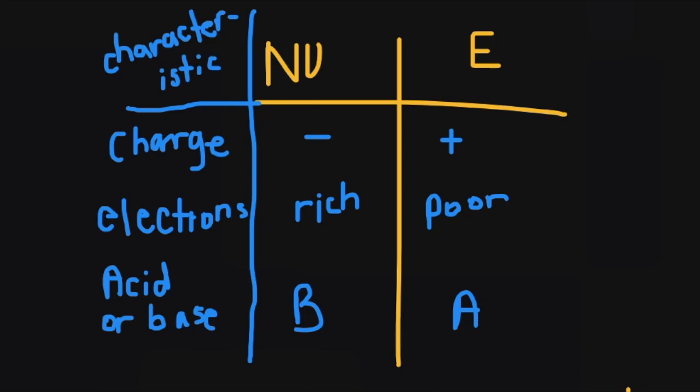Nucleophiles are electron-rich — they have more electrons around them than they usually need, causing their formal charge to become negative. On the other hand, electrophiles are electron-poor and usually have empty orbitals, causing them to have a positive formal charge. The last characteristic is that nucleophiles are usually considered bases, and electrophiles are usually considered acids. When you come across acid-base or nucleophile-electrophile reactions, you need to identify which shape is your nucleophile and which is your electrophile, because the nucleophile will always attack the electrophile — and if you don't know which is which, you won't know which way to draw your arrows.